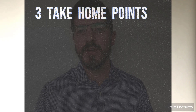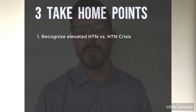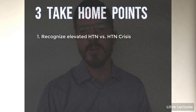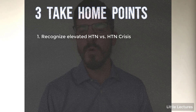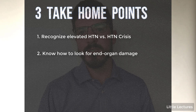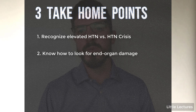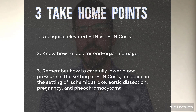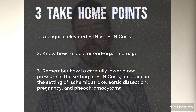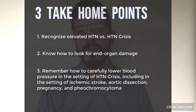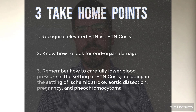A quick recap with three take-home points: First, understand severely elevated hypertension — systolic greater than 180 mmHg or diastolic greater than 120 mmHg. Second, determine whether there is end organ damage: if yes, admit to the ICU for inpatient treatment; if no, manage as an outpatient. Third, recognize the four clinical situations that alter the standard regimen: acute aortic dissection, ischemic and hemorrhagic strokes, pheochromocytoma, and preeclampsia/eclampsia.